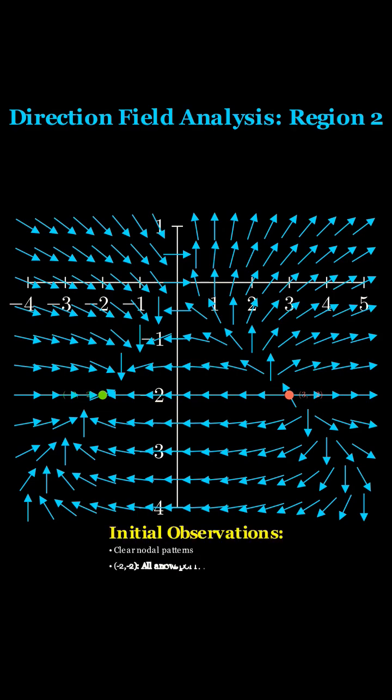In this region, we see two very different patterns. Near negative 2 comma negative 2, all arrows point directly toward the point, while near 3 comma negative 2, all arrows point away from the point.